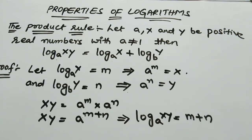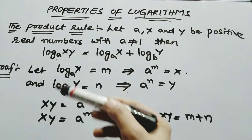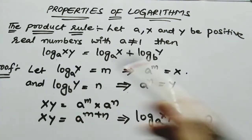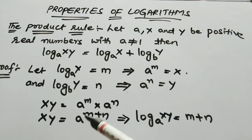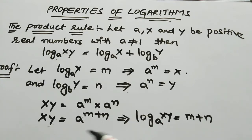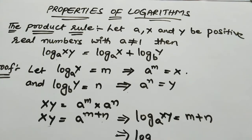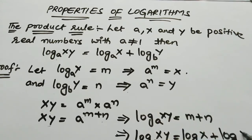So we have m plus n. What is m? m is log x base a. What is n? n is log y base a. So x·y = a^(m+n), meaning log(xy) base a equals m plus n, which equals log x base a plus log y base a. Hence we prove it.